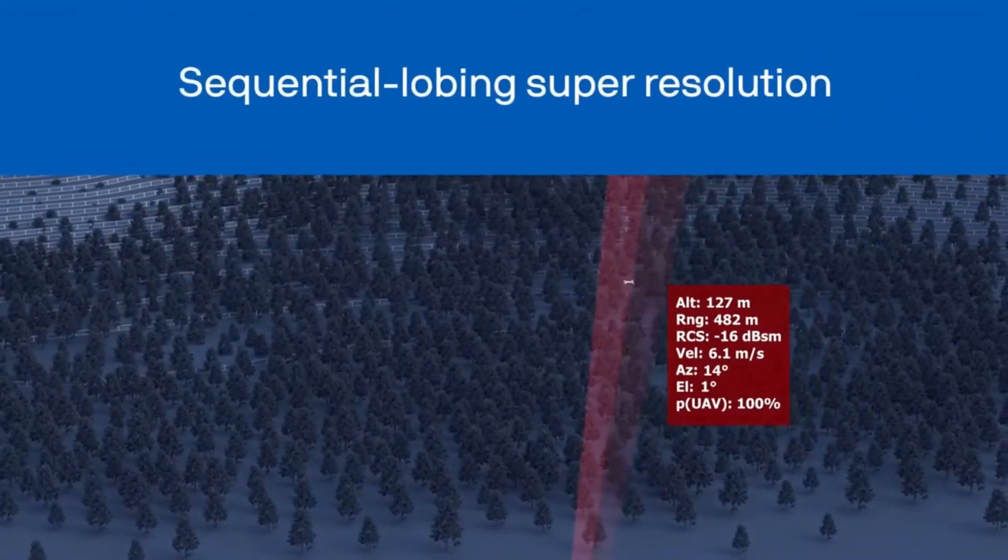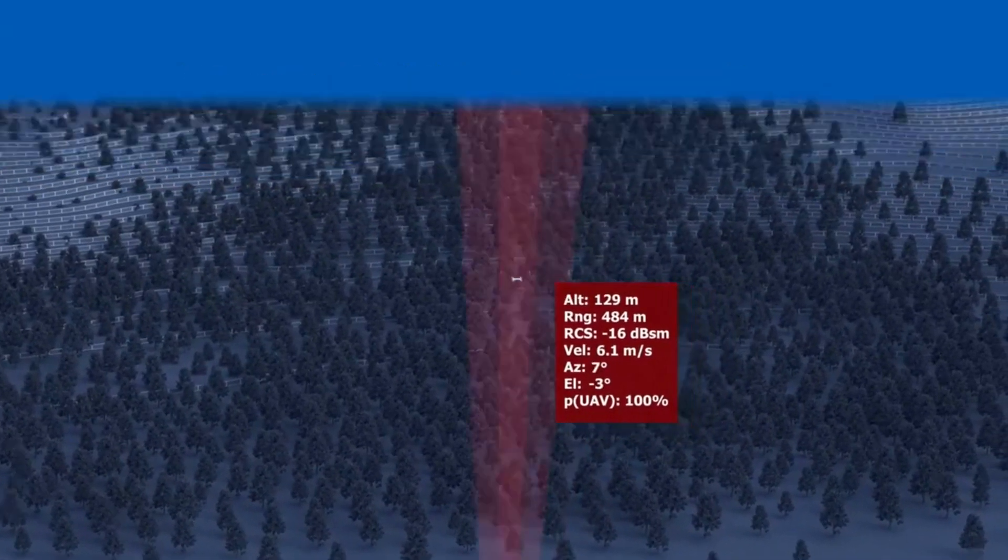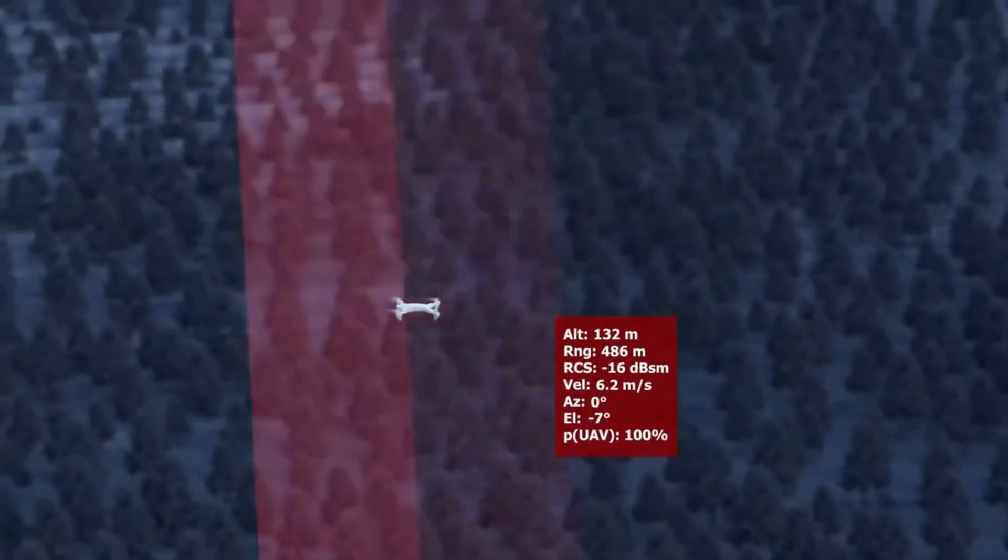Echoguard creates high fidelity 3D super resolved tracks by revisiting each tracked object up to 10 times per second.